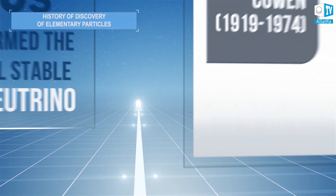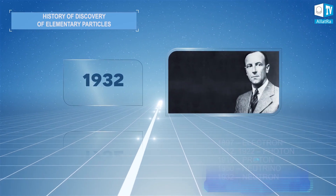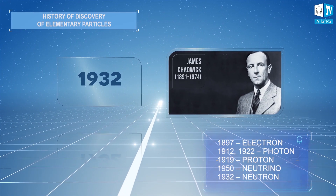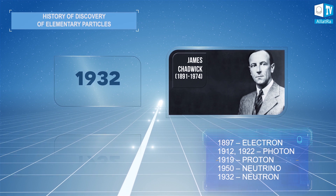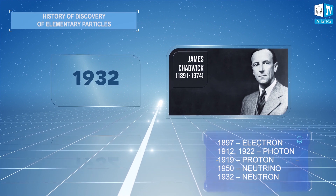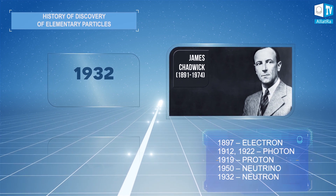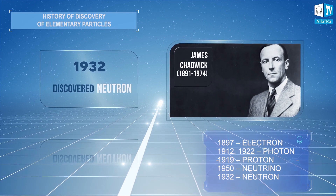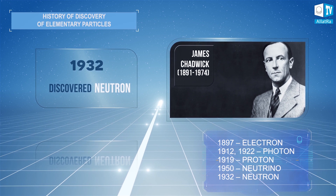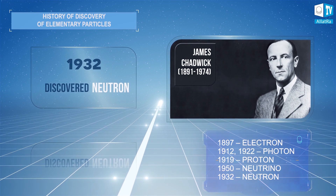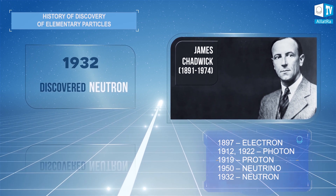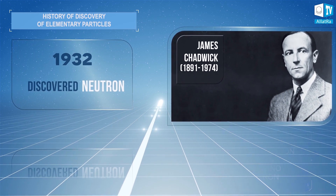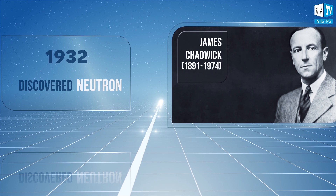In 1932, English physicist James Chadwick, during his research on the interaction of alpha particles with beryllium, discovered the neutron — an elementary particle which is part of an atomic nucleus, whose mass is close to a proton's, but which has no electric charge.